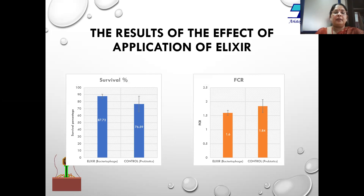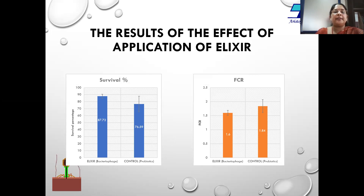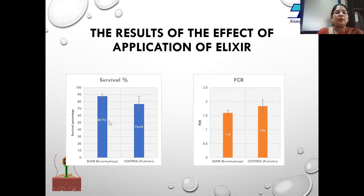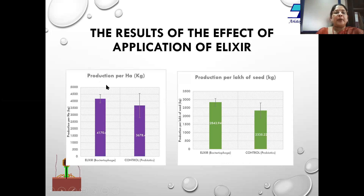These are the results of a field study using Elixir, a grow-out formulation containing bacteriophages, done on a farm in Andhra Pradesh. Fourteen points were selected, of which four used Elixir and ten used probiotics with irregular management. The graphs show that Elixir was able to increase survival by at least 11 percent, FCR decreased from 1.84 to 1.6, and production per hectare and per lakh of seed improved using the bacteriophage.